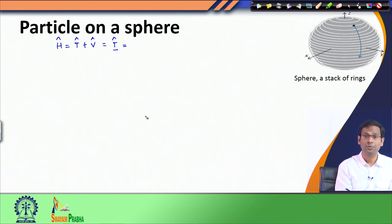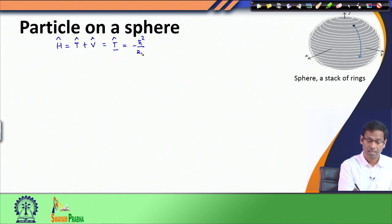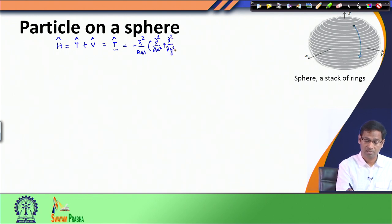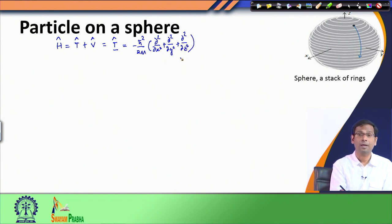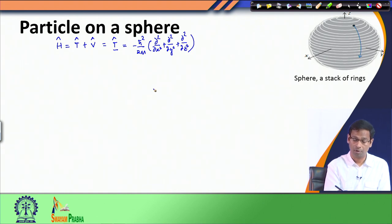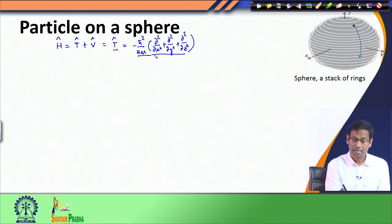Since the particle is moving on a sphere, all three Cartesian coordinates are operational. So I write the Hamiltonian as minus ℏ²/2m times (∂²/∂x² + ∂²/∂y² + ∂²/∂z²). Note that all derivatives here are partial derivatives, because the particle can move over the entire sphere and x, y, z all change simultaneously. This kinetic energy operator in Cartesian form would be appropriate for a particle in a cube or cuboid.